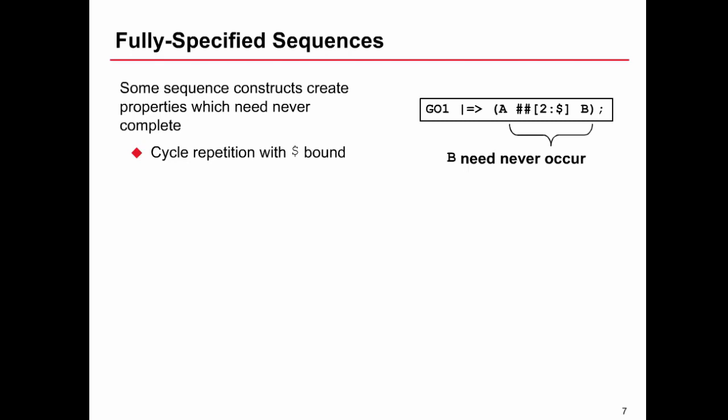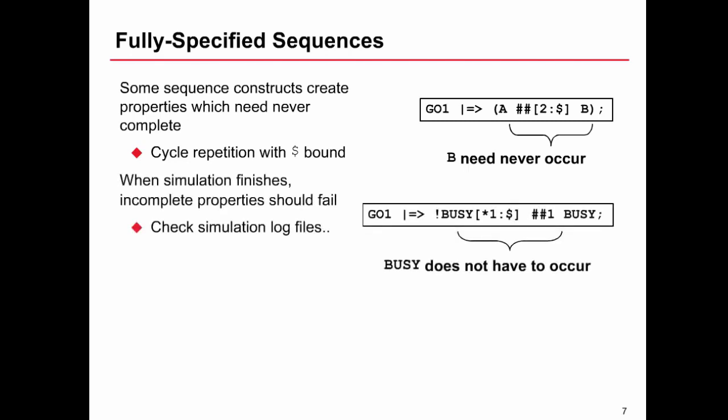When we finish a simulation, then we can get the tool to indicate to us there are properties that have not completed yet. So make sure you check your log files and check your simulator settings that apply to this. In the demonstration that you'll see later on in this course, we will show you how you do that in the cadence simulator. We can also see how this property here go one implies not busy occurs consecutively between one and an infinite number of times followed by busy. This doesn't require busy to occur either for the same reason exactly.